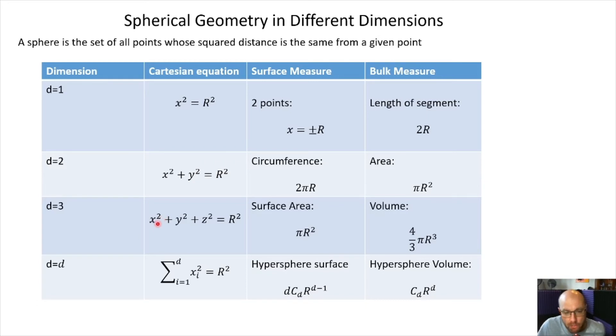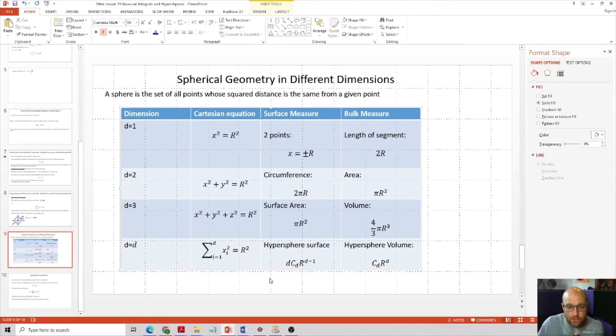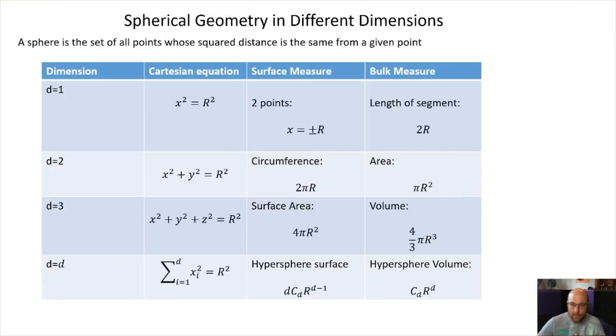Let's go up to three dimensions. Now we sum three coordinates equal to R². The surface measure is the surface area of the sphere. I missed a factor of four there, copy-paste error. The surface area of a sphere is 4πR². That matters, actually. And the bulk measure is the volume, which is 4/3 πR³.